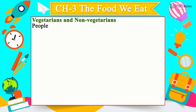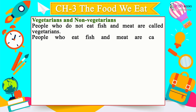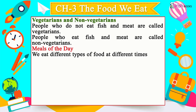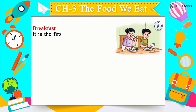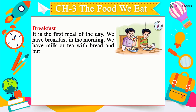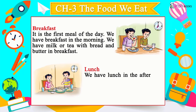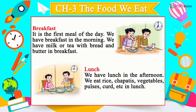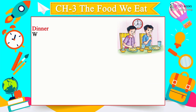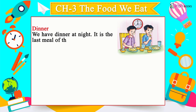People who eat fish and meat are called non-vegetarians. Meals of the day: we eat different types of food at different times. Breakfast is the first meal — we have milk or tea with bread and butter in the morning. We have lunch in the afternoon — rice, chapatis, vegetables, pulses, curd, etc. Dinner is the last meal of the day, eaten at night.